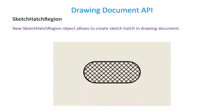A new object called Sketch Hatch Regions is introduced to create a sketch hatch in a drawing document — this is the first time it has been introduced in Inventor 2021. In drawing sketch edit mode, a closed profile can be used to assign sketch origin.